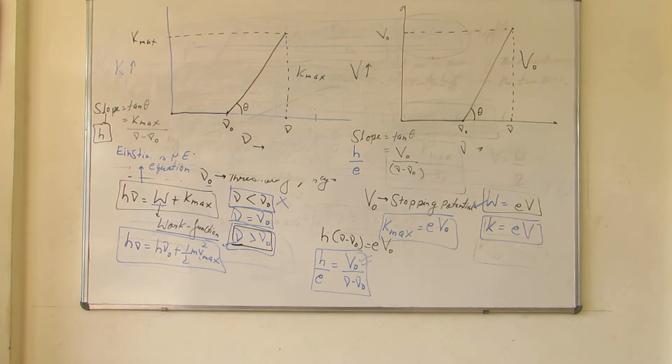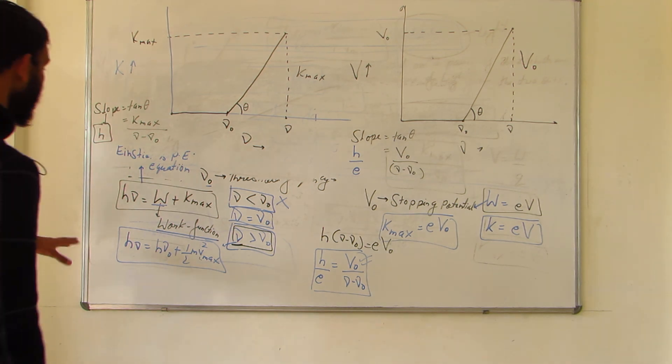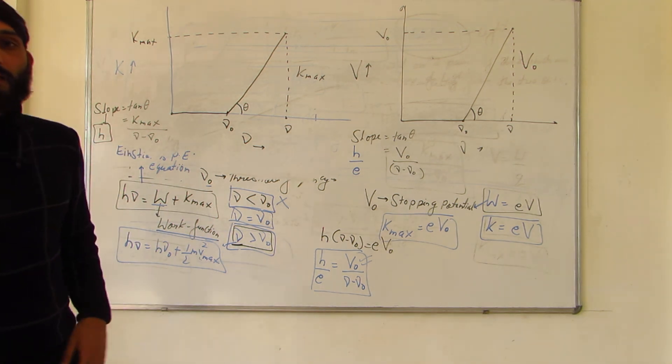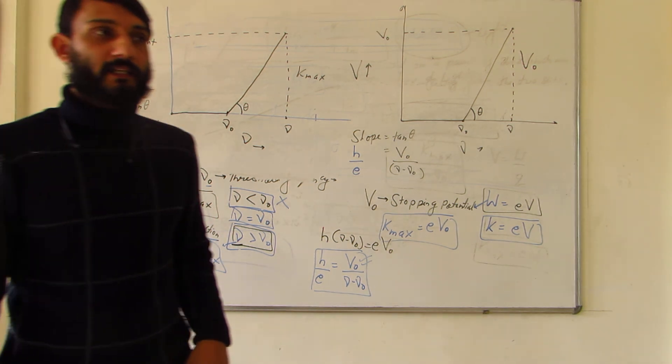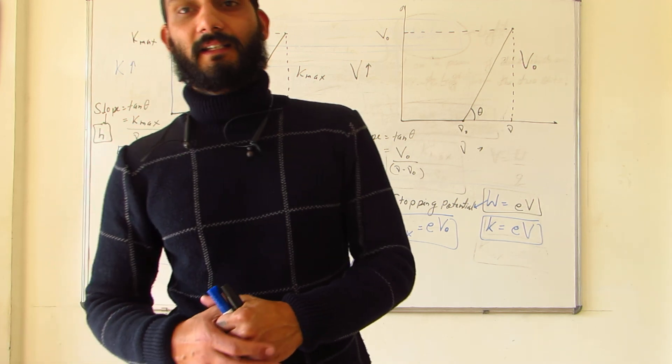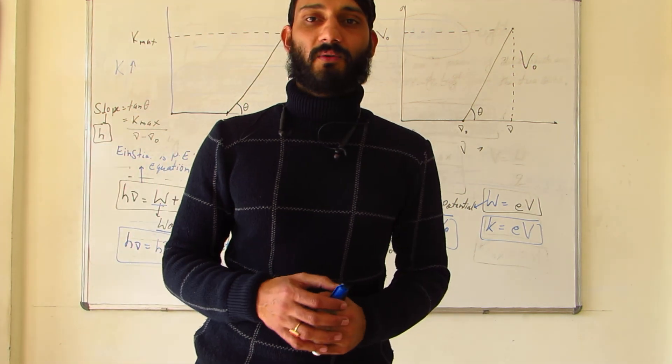We have now covered Einstein's photoelectric equation and understood the key terms: threshold frequency, stopping potential, and work function. These two graphs and these formulas are all important. We will continue with these topics in the next class.